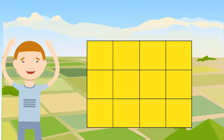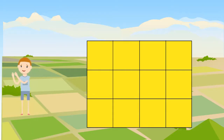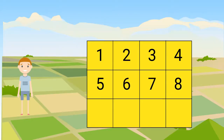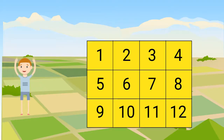This is awesome. Now all we have to do is count the squares. Get ready and count with me. 1, 2, 3, 4, 5, 6, 7, 8, 9, 10, 11, 12. We divided this rectangle into 12 squares. Fantastic!